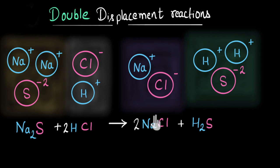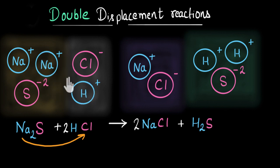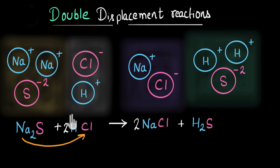So the first question is: can sodium exchange its position with chlorine instead of hydrogen? I want you to pause the video and think about this by yourself first. So, if sodium exchanges position with chlorine, that means a molecule of sodium and hydrogen should be formed, right? But see, sodium and hydrogen are both positively charged. And we know that like charges do not attract but repel each other. And if they are repelling, there is no way that they can form a molecule. So that's why sodium cannot exchange position with chlorine.